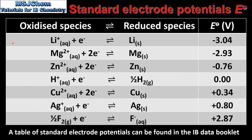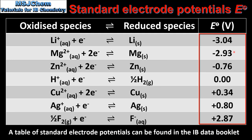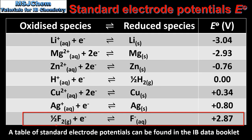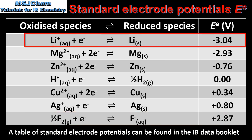We will end the video by looking at a table of selected standard electrode potential values. These are written for the reduction reactions. The more negative values are at the top of the table, and as we go down the values get less negative or more positive, ranging from negative 3.04 to positive 2.87. The more positive the value, the more readily the half reaction occurs. The more negative the value, the less readily it occurs. This tells us that fluorine is the strongest oxidizing agent in the table, and the lithium ion with the most negative value is the weakest oxidizing agent.